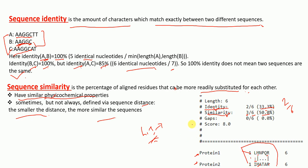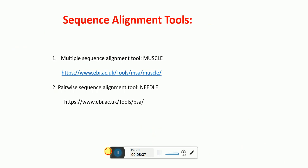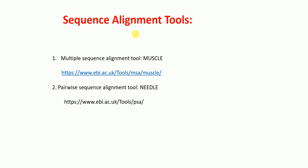Now that we have talked about sequence alignment, pairwise sequence alignment, multiple sequence alignment, sequence identity, and sequence similarity, I'm going to show you how to perform these sequence alignments using web-based tools. The web-based tools we will be using are: for multiple sequence alignment, the tool is called MUSCLE, and for pairwise sequence alignment, we will be using the tool called NEEDLE. I will provide the links for all these tools in the description.